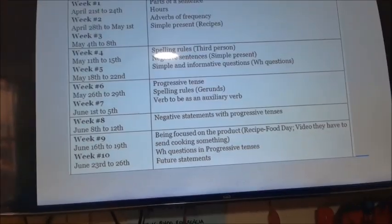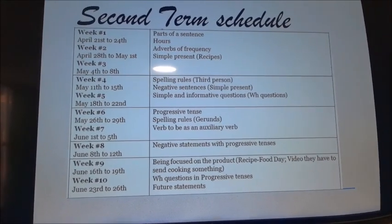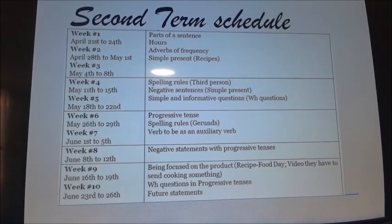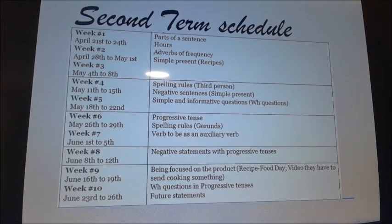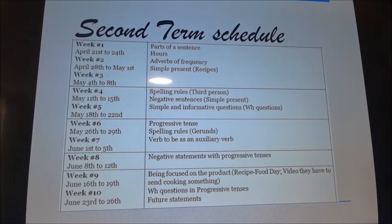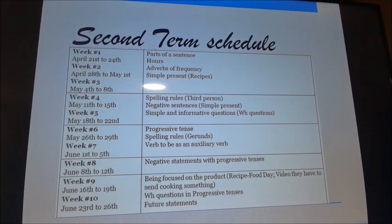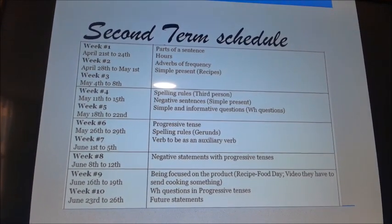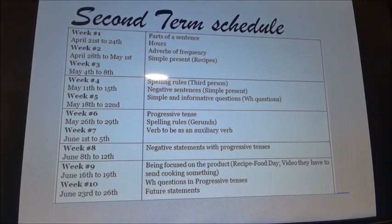Week number six and seven we have to speak about the progressive tense, the spelling rules to create gerunds, and the verb 'to be' as an auxiliary verb. On week number eight we have to speak about negative statements with progressive tense. Weeks nine and ten we have to be focused on the recipe for the food day — you have to create a video — then WH questions in progressive tense, and finally future statements.